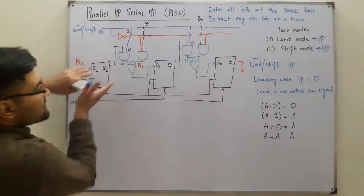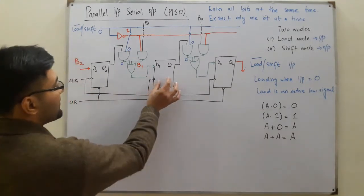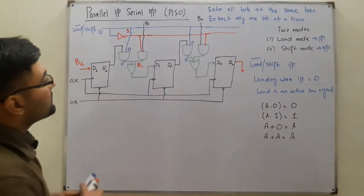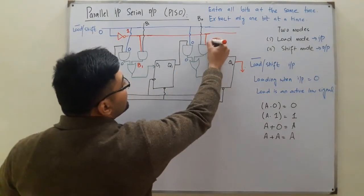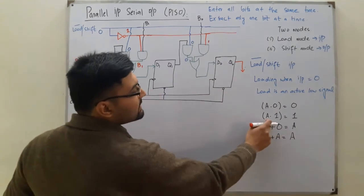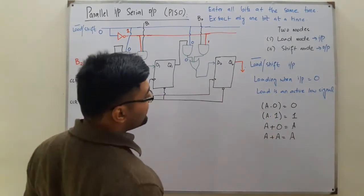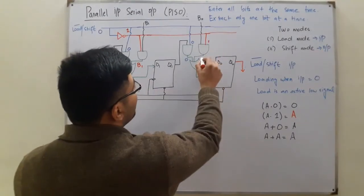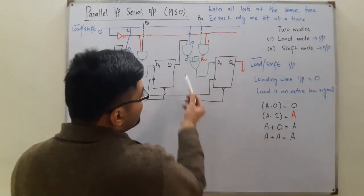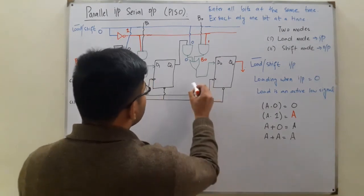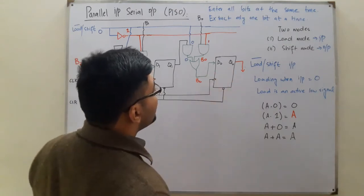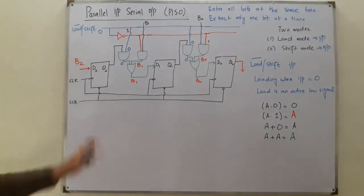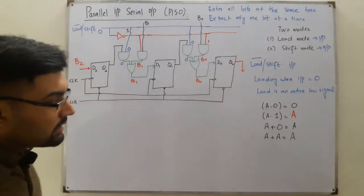So B1 is fed into D1, meaning this flip-flop has been loaded with B1 — the most significant bit position is loaded. Similarly for B0: B0 ANDed with one is B0, and B0 OR'd with zero is B0. So B0 is fed into D0 and that flip-flop is loaded. The register has now been loaded with the parallel input values.